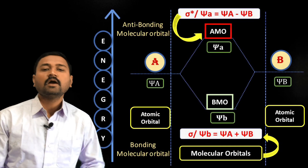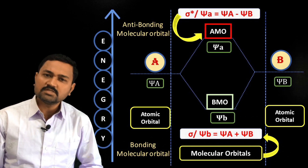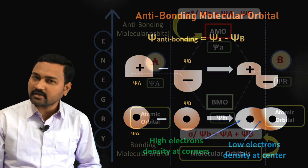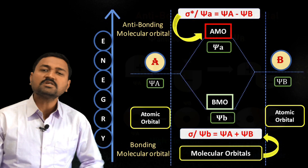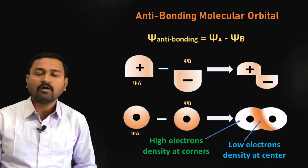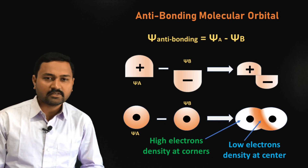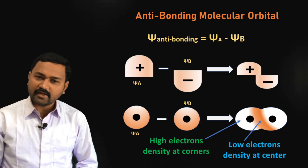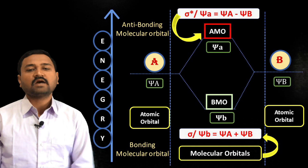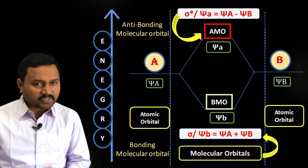The destructive interference of two waves leads to the formation of the anti-bonding molecular orbital, which has higher energy and less stability. When the waves combine out of phase, they give rise to a smaller wave — the anti-bonding molecular orbital — with greater energy and less stability. In such anti-bonding molecular orbitals, the electron density between the two combining atoms is negligible or nil, while the electron density is present at the corners of the combining atoms. The electrons are not attracted by both nuclei, and hence the energy of the anti-bonding molecular orbital is higher than the parent atomic orbitals.